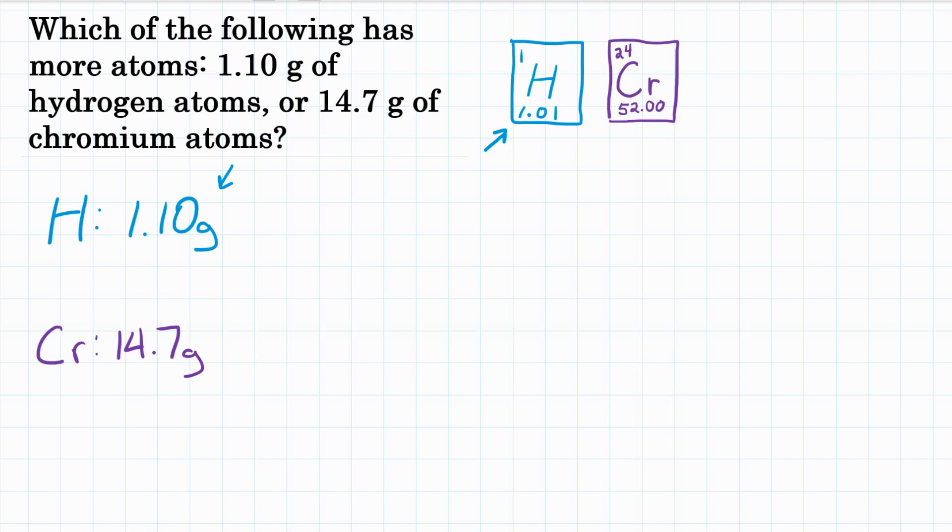For chromium, you would need 52 grams to have one mole. Remember, a mole is just a number. It's 6.02 times 10 to the 23rd. In this problem, we're talking atoms.